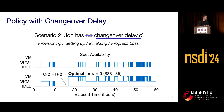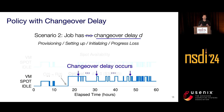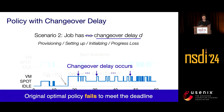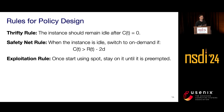However, when changeover delay is involved — which is the normal case in the real world — the problem becomes non-trivial. The original optimal policy no longer works because every switch between spot and on-demand instances causes a changeover delay that makes no job progress but still consumes time needed for computation. The original optimal policy fails to meet the deadline due to these additional overheads, and the problem becomes non-trivial since we have no idea about future spot availability, so the policy cannot know in advance how much time to save for future overhead.